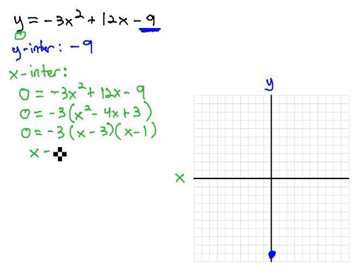Setting each factor equal to 0, x minus 3 equals 0 and x minus 1 equals 0, we can quickly solve for our x-intercepts. Adding 3 gives us x equals 3, and adding 1 gives us x equals 1.